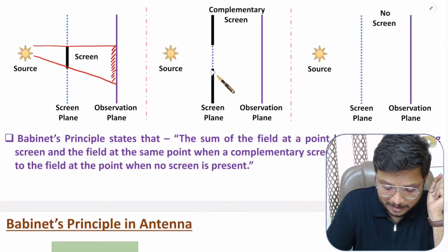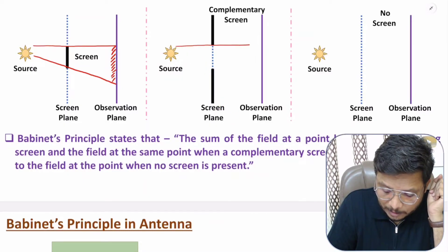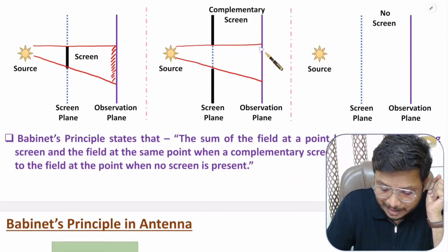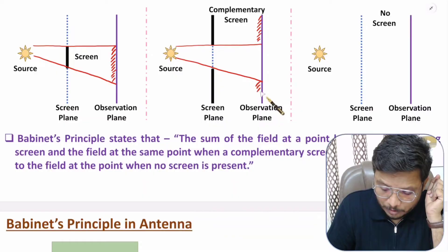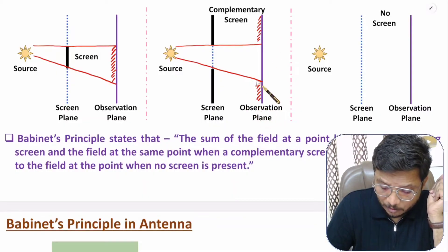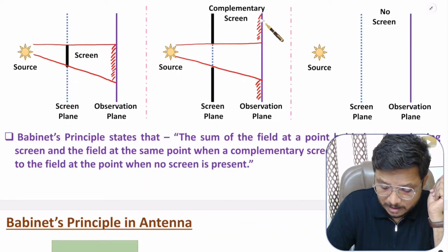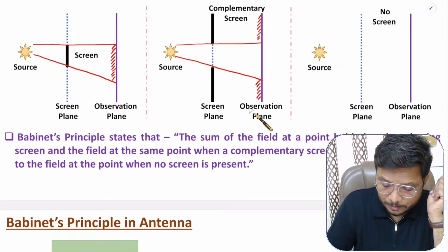With the complementary screen, the source is radiating light toward the observation plane. Now light appears where there was previously shadow, and shadow appears where there was previously light. So the shadow and light patterns are getting complemented on the observation plane.